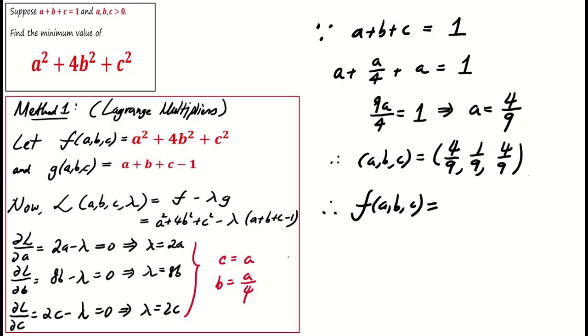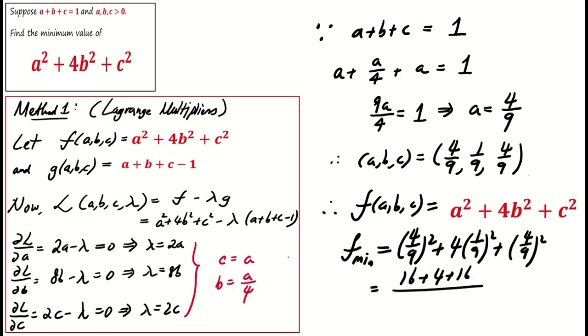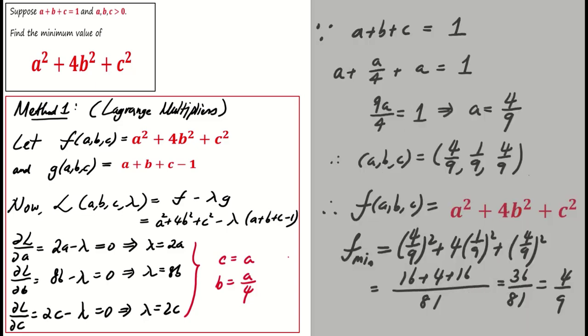Substituting this into the original function f of a, b, c, we find the minimum value to be 4 over 9. This concludes method 1.